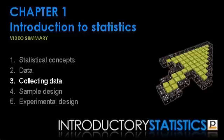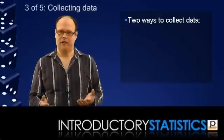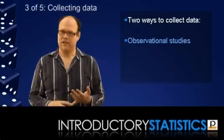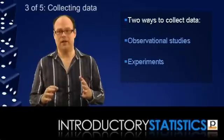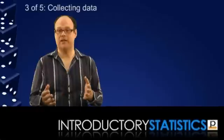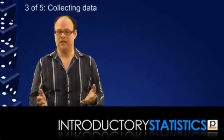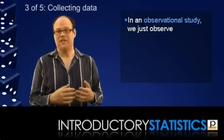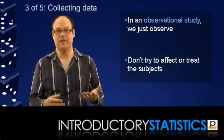So that's data. But how do we get data? How do we collect it? Well, there are two main methods of data collection available for us. There's observational studies and there's experiments. In both methods, we basically get data by observing responses from subjects of the study. But the way the methods differ is in how we treat those subjects. In an observational study, we basically don't treat them, we just observe them. So an observational study could be a survey, for example.